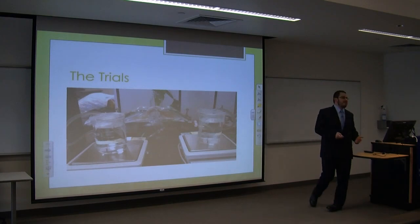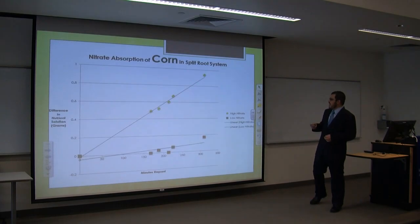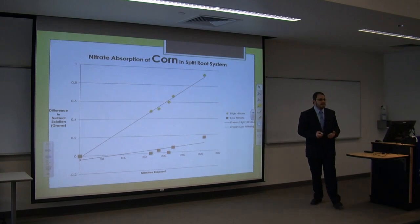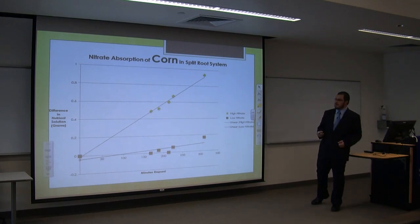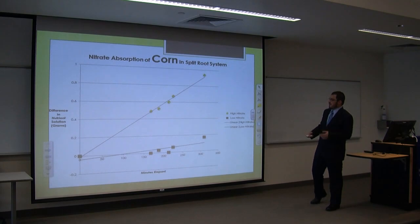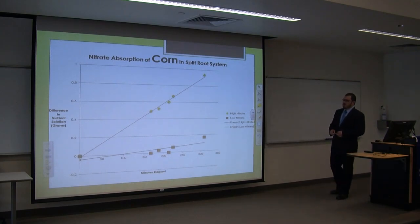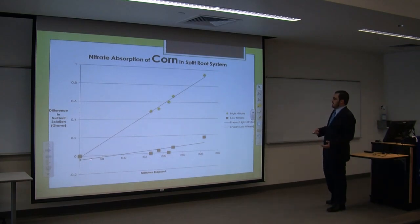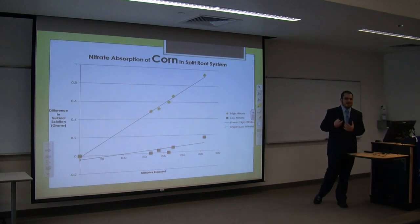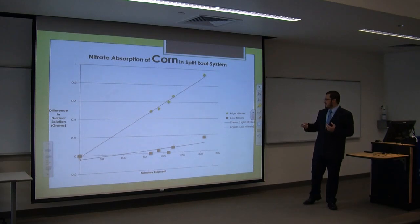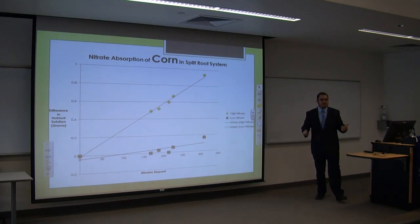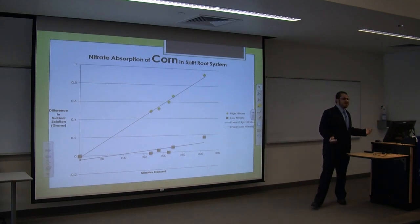This is what I saw after running trials for about five hours. Here we have the corn data. On the left is the difference in nutrient solution in grams — raw data from the scale calculated out to milligrams per minute — and along the bottom are the minutes. The green line is the high nitrate and gray is the low nitrate. It's obvious that the corn had higher hydraulic conductivity on the high nitrate side — it really wanted that nitrate solution. The low nitrate side shows very little uptake, which makes sense because nitrogen is a limiting factor of plant growth.